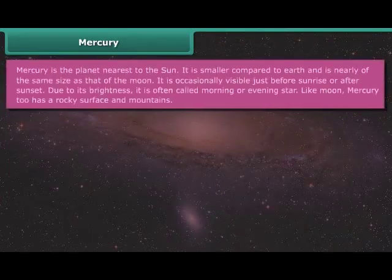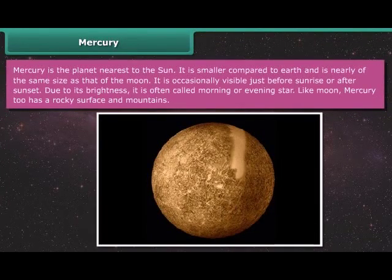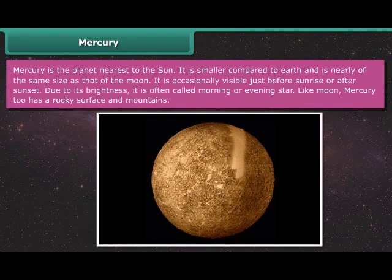Mercury is the planet nearest to the Sun. It is smaller compared to Earth and is nearly of the same size as that of the Moon. It is occasionally visible just before sunrise or after sunset. Due to its brightness, it is often called morning or evening star. Like Moon, Mercury too has a rocky surface and mountains.